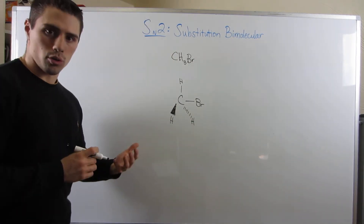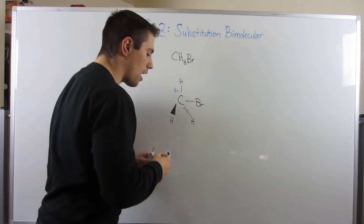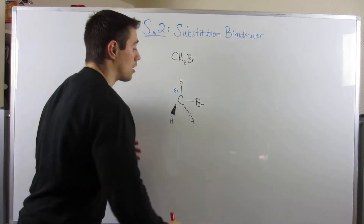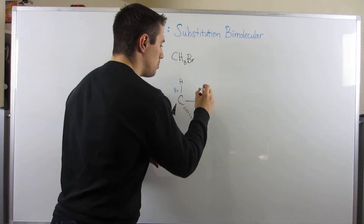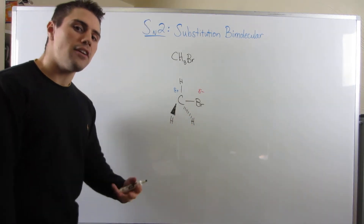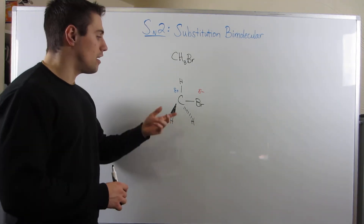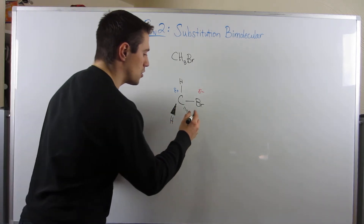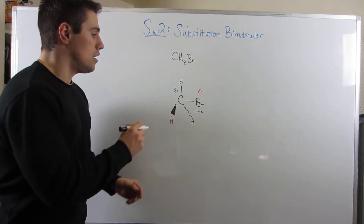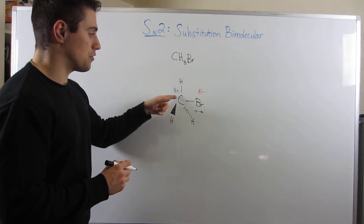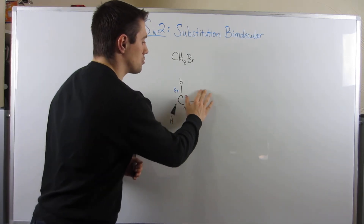This is a polar molecule. There is a delta plus — a partial positive charge — on this carbon that's attached to this bromine that is partially negative, because there's an electronegativity difference there. The halogens are more electronegative, so this bromine is stealing some electron density and pulling it towards itself. This carbon is partially positive.